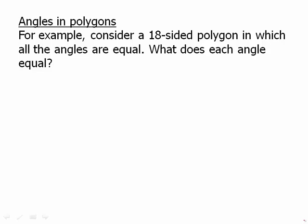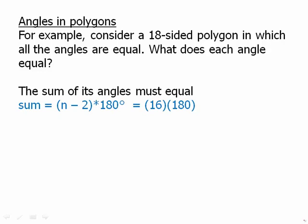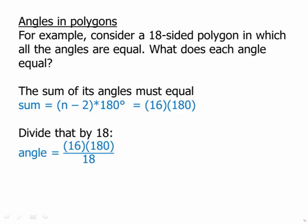For example consider an 18-sided polygon in which all the angles are equal. What does each angle equal? Pause the video and see if you can work this out for yourself. Okay so we know that the sum of the angles must equal n minus two times 180 so 16 times 180. I'm not going to multiply that out I'm just going to leave it like that 16 times 180 and if all 18 angles are equal then we'll divide that sum of the angles by 18 to get one of the single angles. Well when we divide by 18 we can very easily cancel, 180 divided by 18 is just 10 and so that equals 160 degrees and that is the measure of each one of those 18 angles.